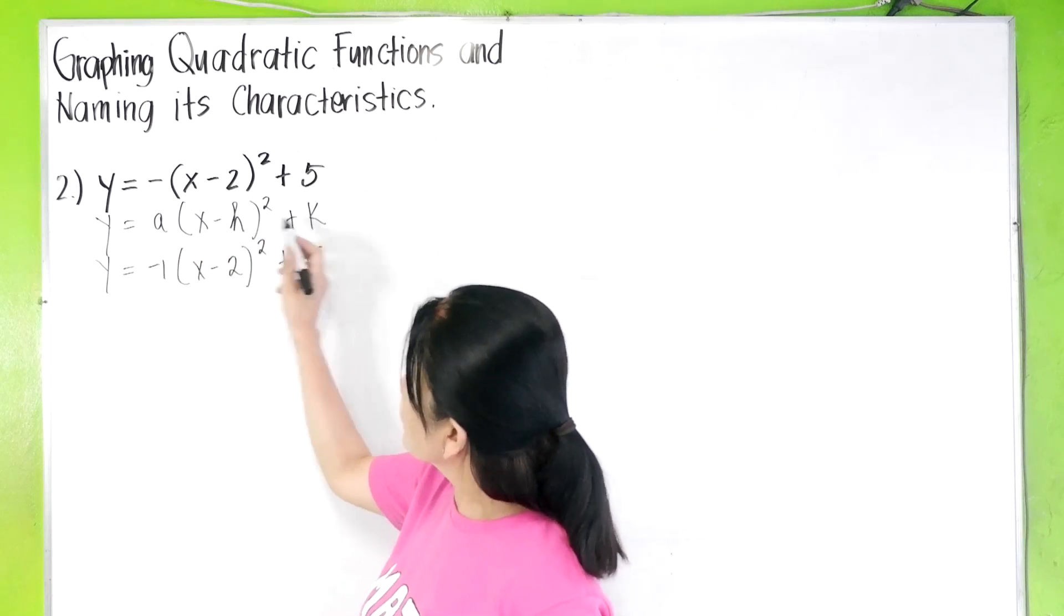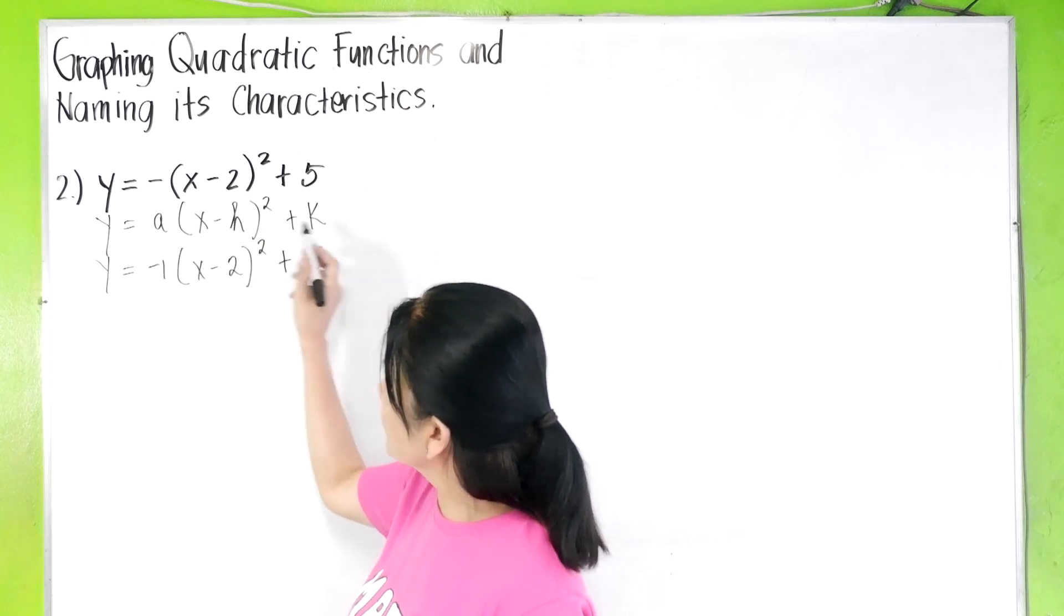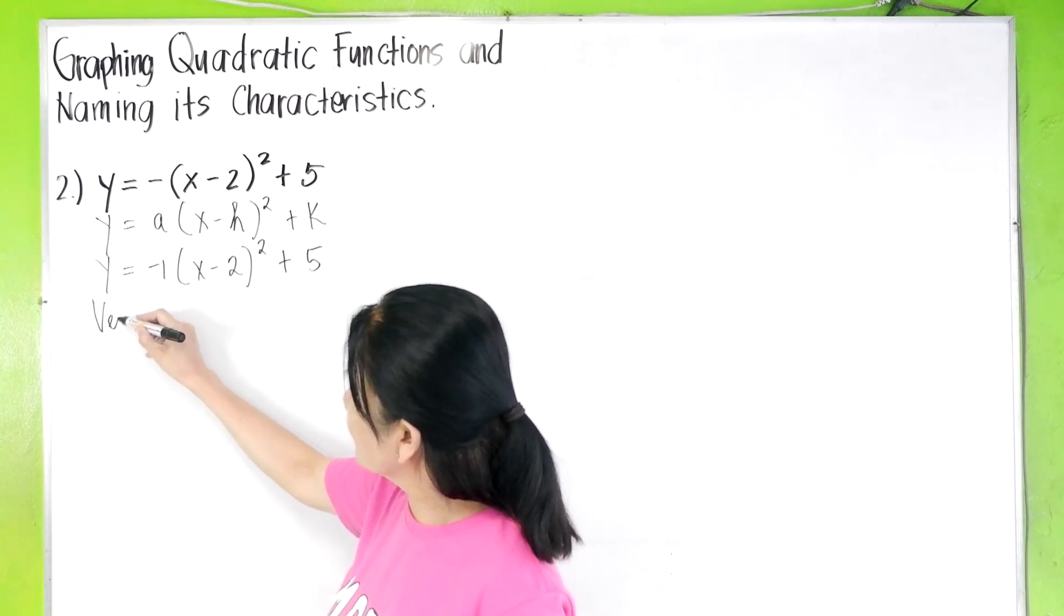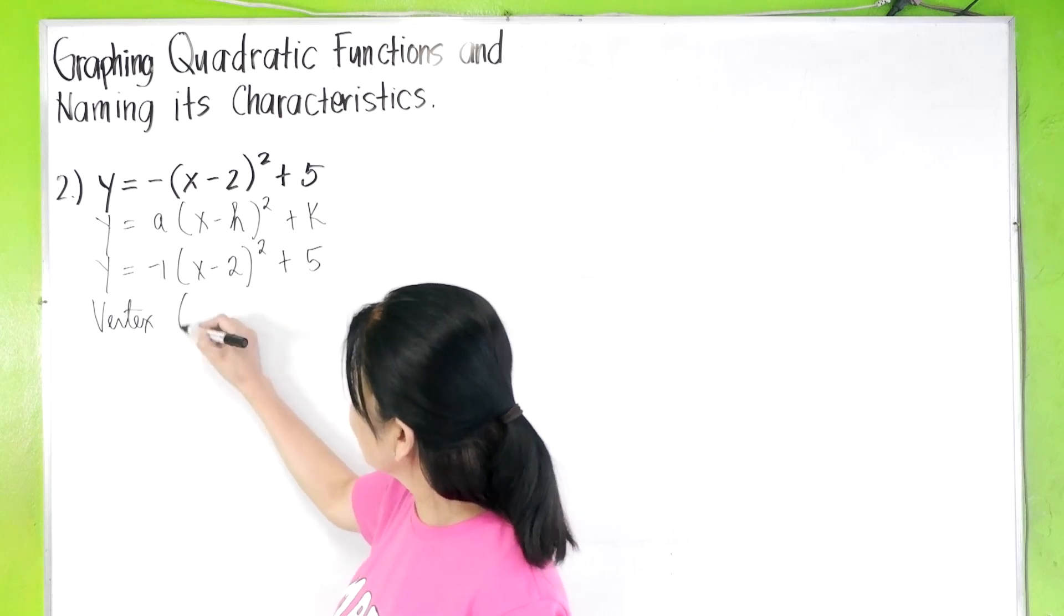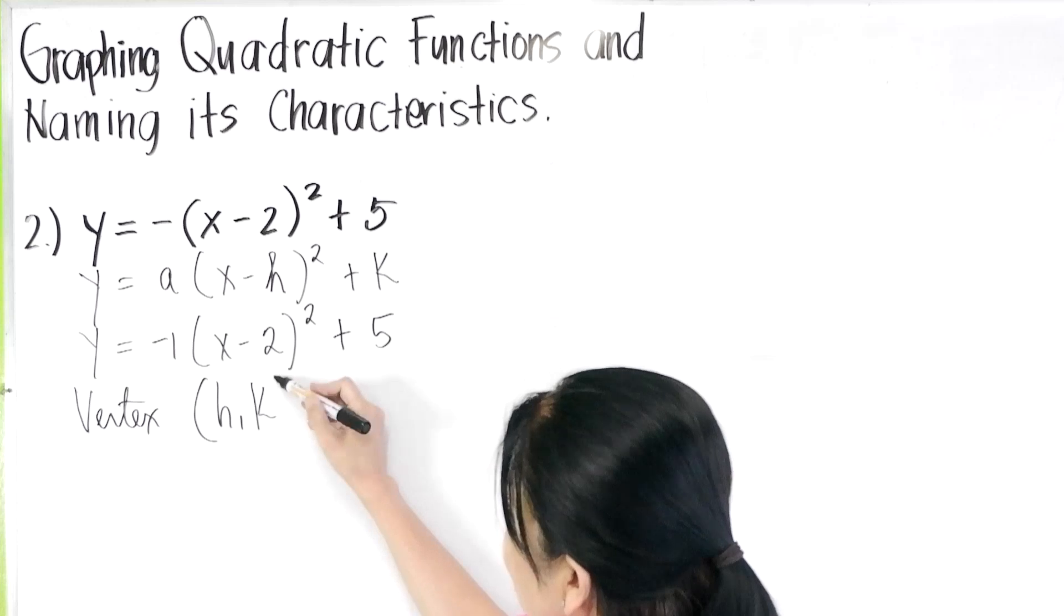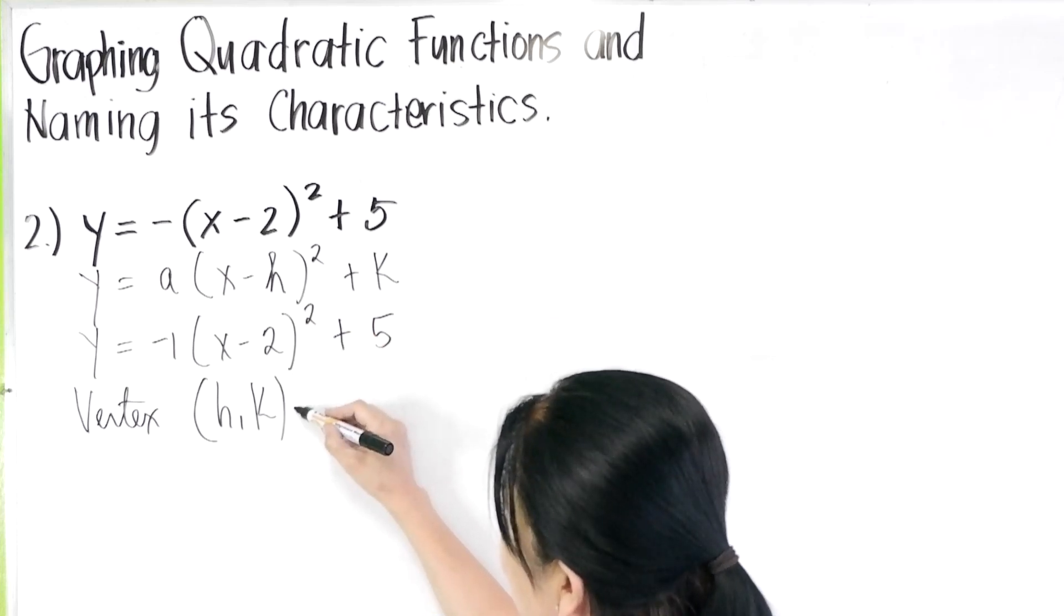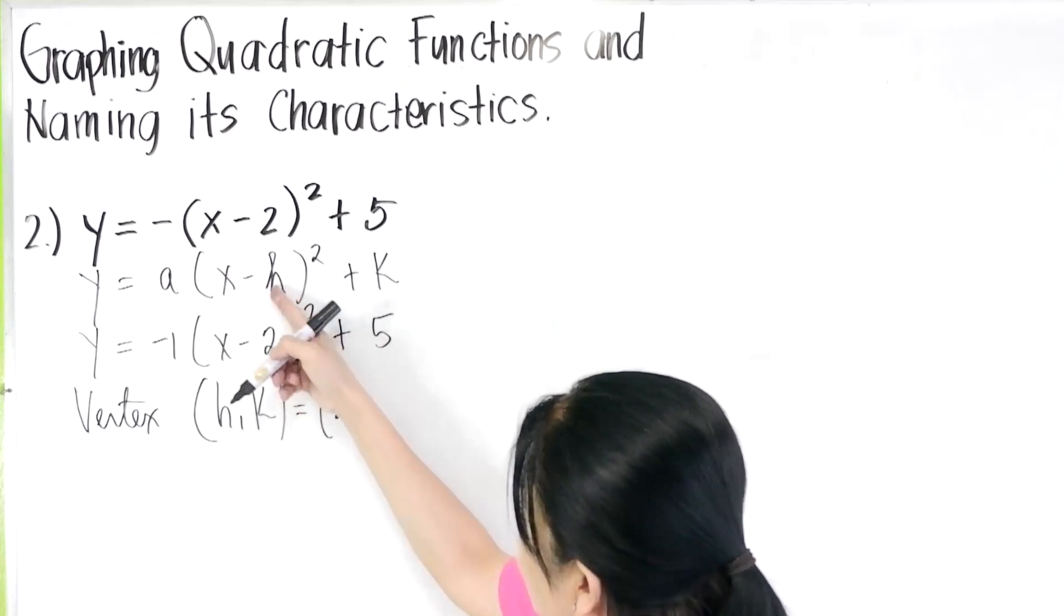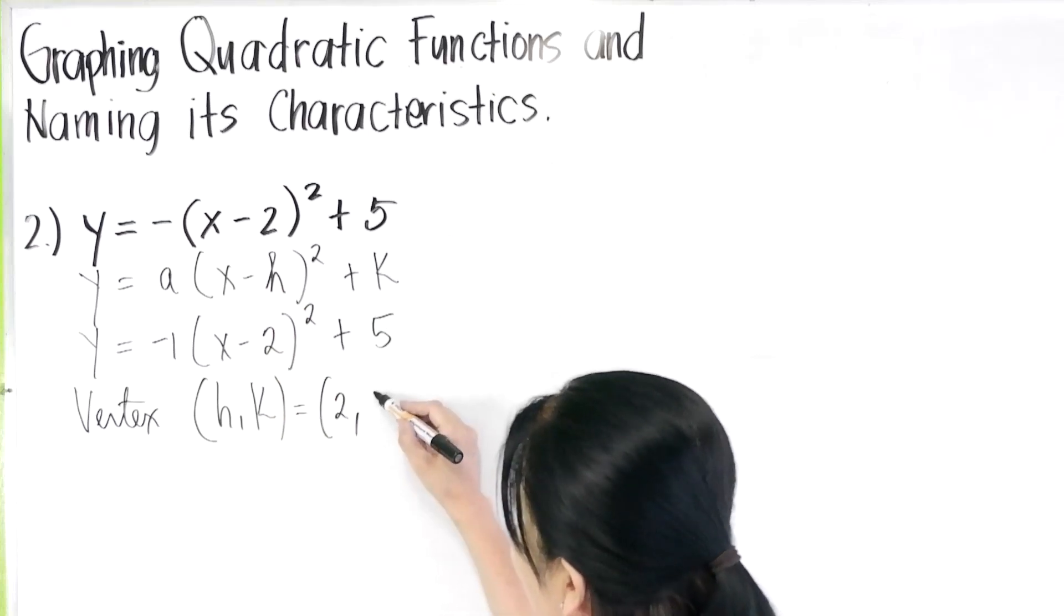So we learned in my other video that when the quadratic function is written in this form, or which we call the vertex form, we can easily identify the vertex. The vertex here is h, k. There, h which is two, k is five.